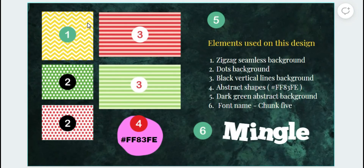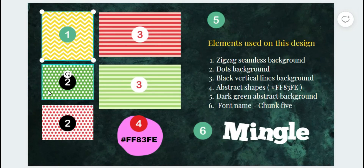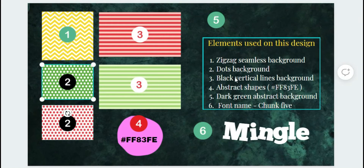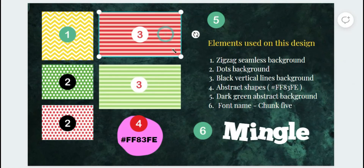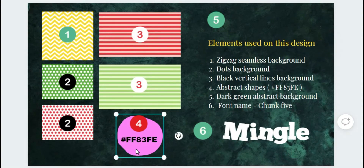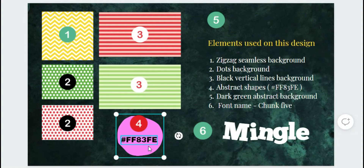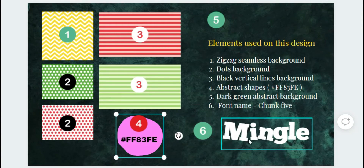The first element is a zigzag seamless background, and the second is a dots background, then a black vertical lines background, and an abstract shapes element with the hex color code #FFA3FE. This hex color is the key for later on.